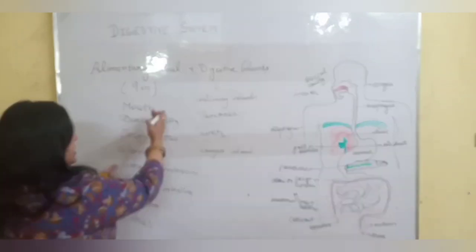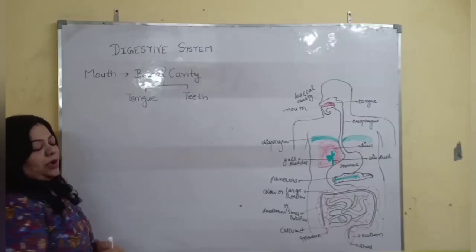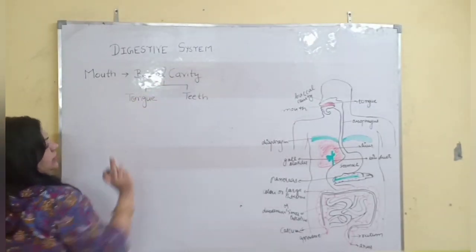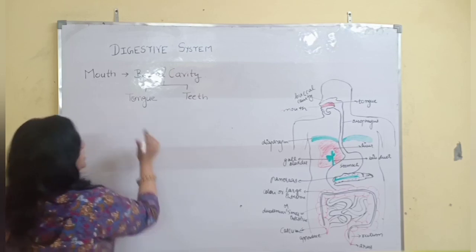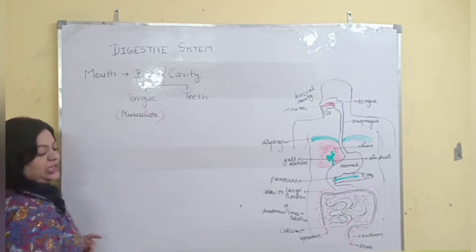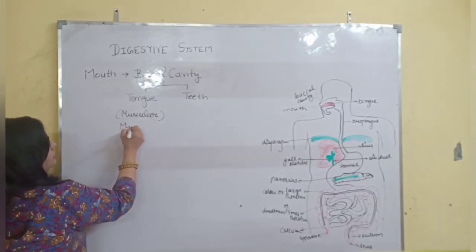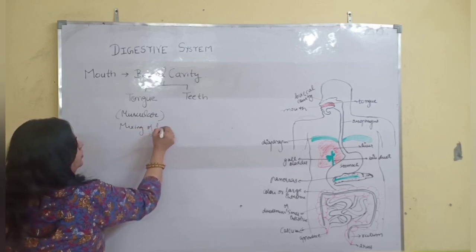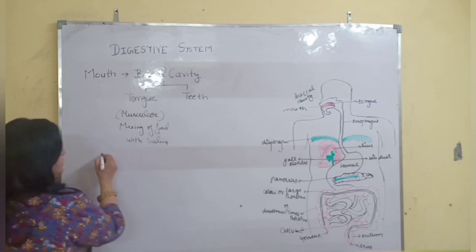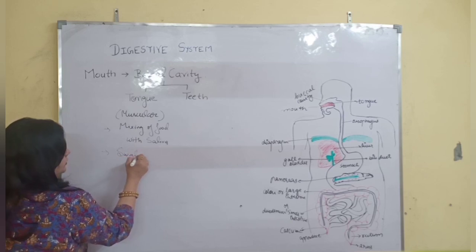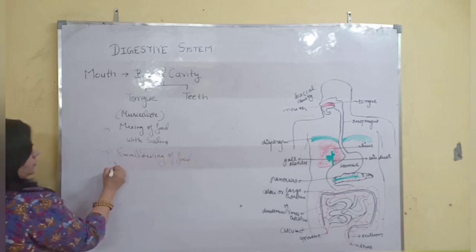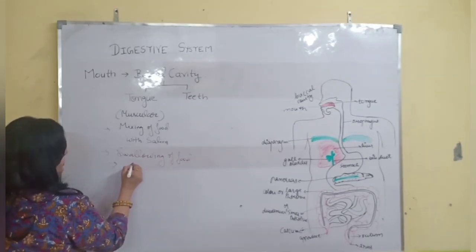Now we are going to discuss each and every part of the alimentary canal. The mouth is the opening of the alimentary canal which leads to the buccal cavity. The buccal cavity has two main parts: tongue and teeth. The tongue is a muscular structure which helps in mixing food with saliva, making the food into a dissolved form, and helps in swallowing food towards the oesophagus. It also helps in speech.